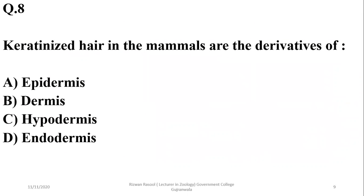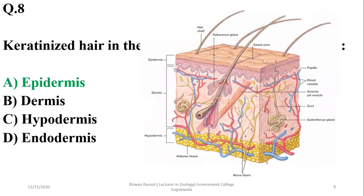Question 8: Keratinized hair in mammals are derivatives of which part of the skin? Hair is derived from the epidermis. The right option is A. Although hair penetrates deep into the dermis, it is actually an extension of the epidermis only.